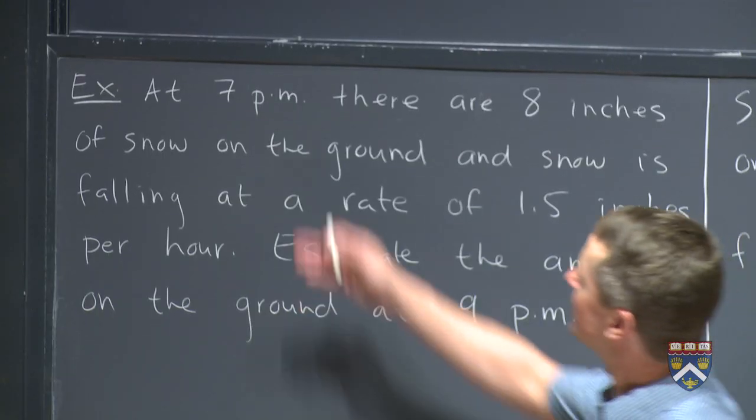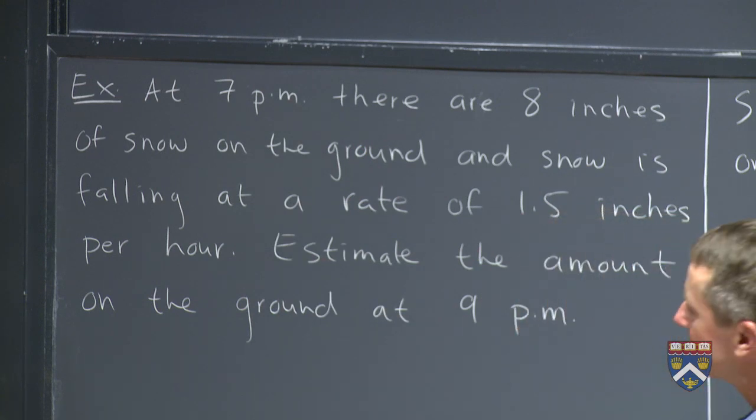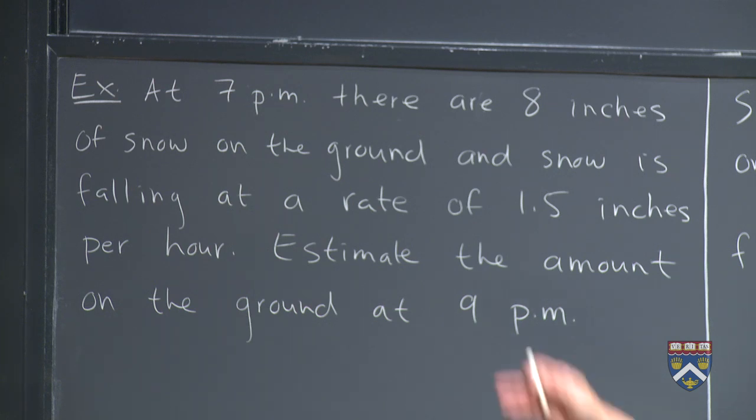Here's an example. At 7 o'clock in the evening there's 8 inches of snow on the ground and snow is falling at a rate of 1.5 inches per hour. We would like to estimate the amount of snow there will be on the ground at 9 p.m.